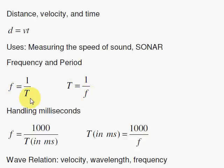When you're dealing with milliseconds, I recommend using this variant where you have a thousand here and the T is in milliseconds. So if you have two milliseconds for your period, two goes into a thousand 500 times, you have 500 hertz. And you don't have to worry about using this formula with decimals and moving decimal places in various places. So this is a recommendation to use those formulas.